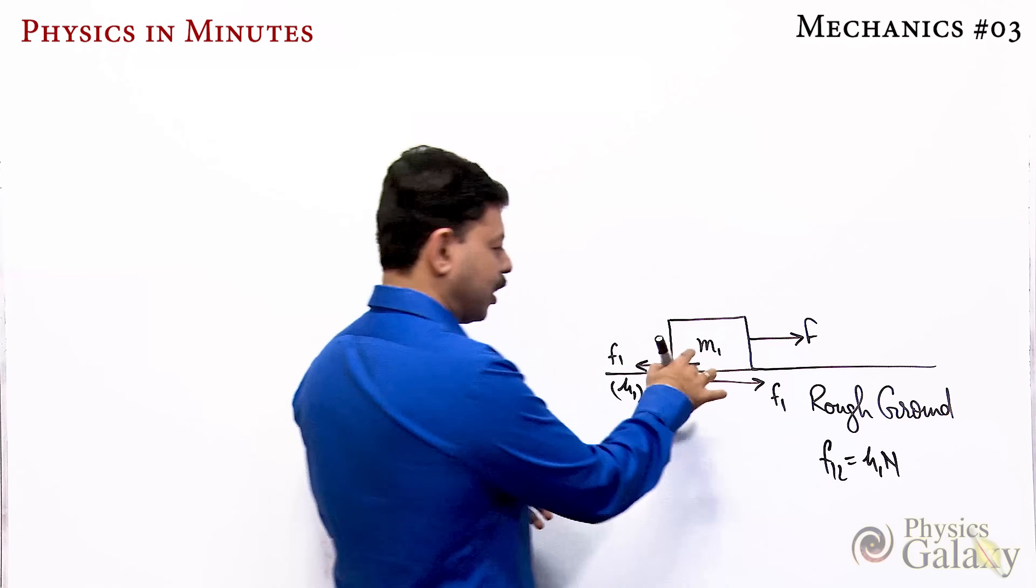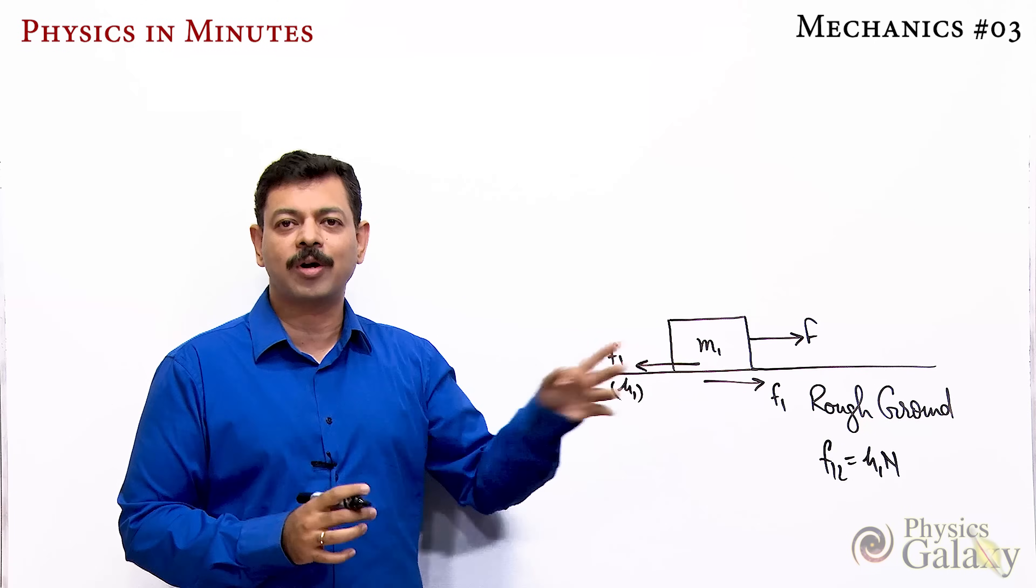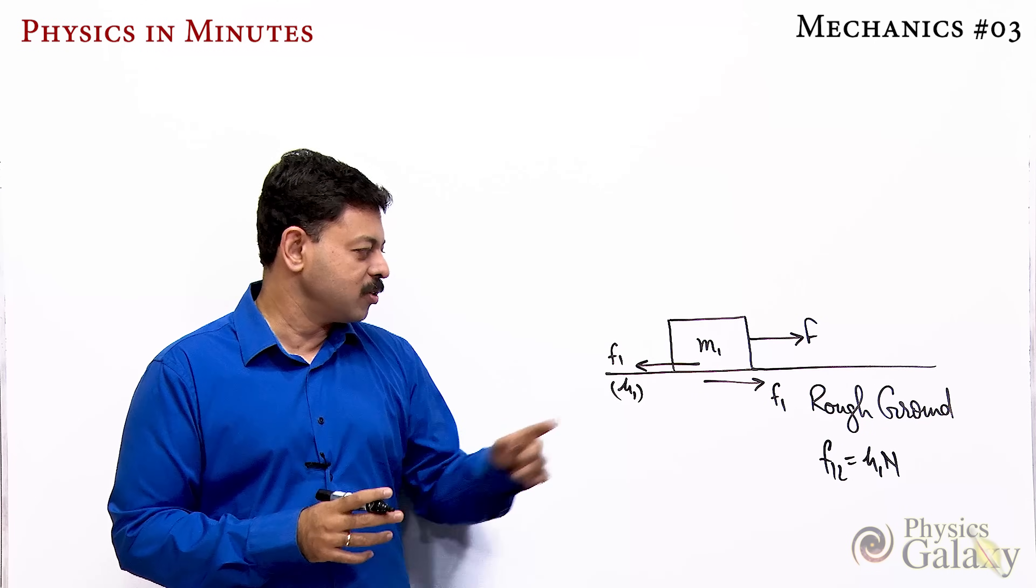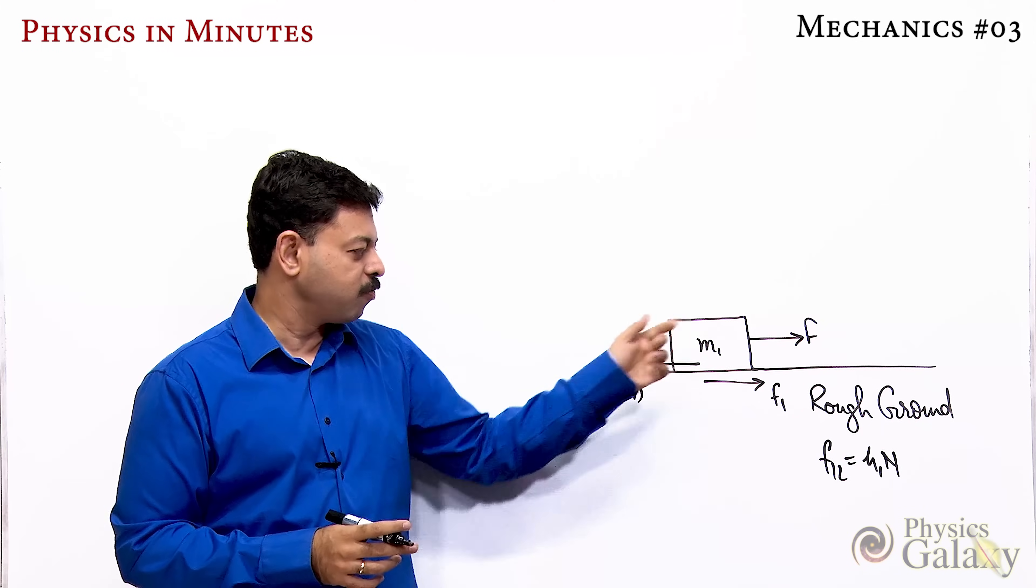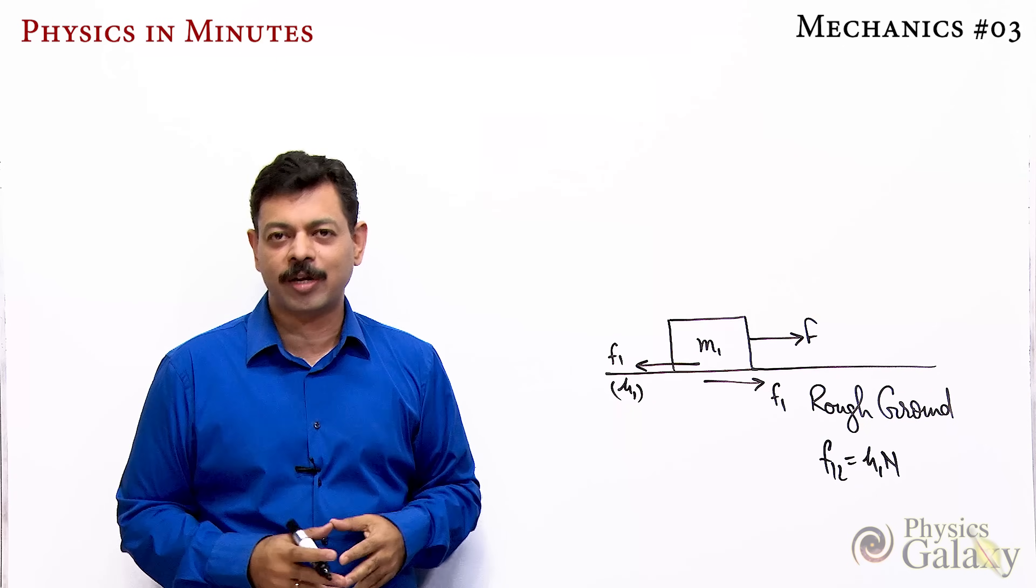The limiting value of friction will be μ1 times N where N is the normal reaction between this block and ground. When the limiting value is crossed, it starts moving with acceleration f minus friction upon m1. These are elementary things.